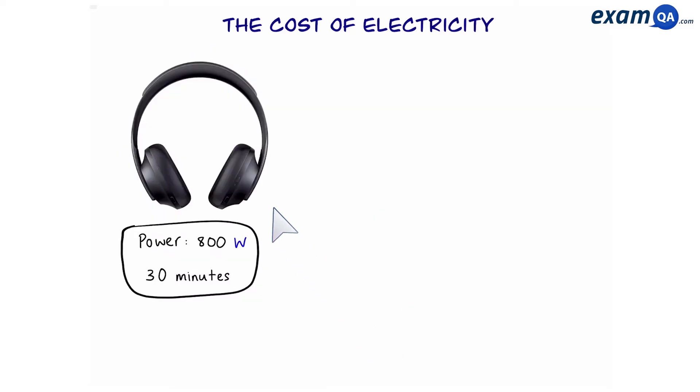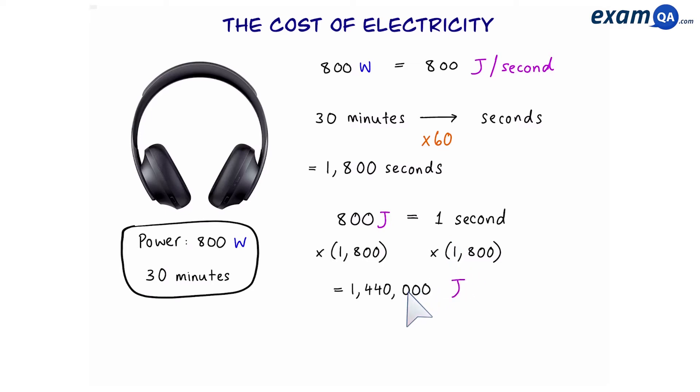Let's move on to the headphones. The headphones have a power rating of 800 watts which means they use 800 joules per second. Since we use them for 30 minutes we times by 60 to convert into seconds. That gives us 1800 seconds. So 800 times 1800 gives us 1,440,000 joules. Again we divide by a thousand to turn it into kilojoules.